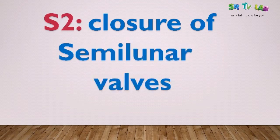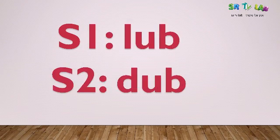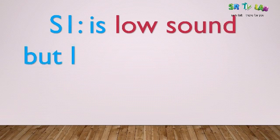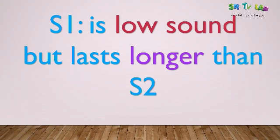S2 sound is for the closure of semilunar valves — the aortic and pulmonary valves. The heart sound S1 is RAP and S2 is DAP, so when you hear them they will sound like RAP DAP RAP DAP. The S1 sound is a very low sound but it lasts longer than S2.